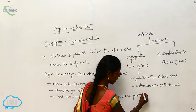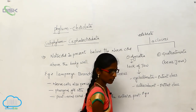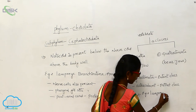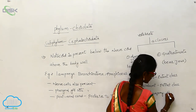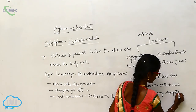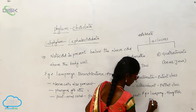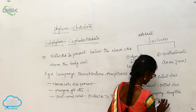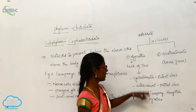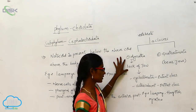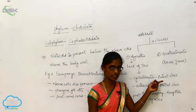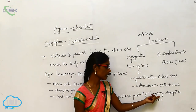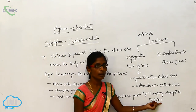Examples for Agnatha are Lamprey, Hagfish, and Myxine. These are the examples for Agnatha, which lacks jaws. The extant classes within Agnatha are Cyclostomata and Ostracodermi.